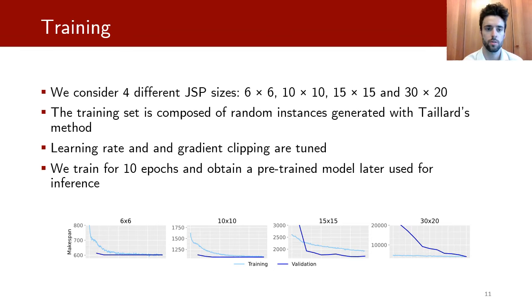For training we consider four different sizes of the problem: 6x6, 10x10, 15x15 and 30x20. We train our models on datasets composed of random instances generated with Taillard's method. Our hyperparameters are tuned and we train our four models for 10 epochs and obtain a set of pre-trained models later used for inference.